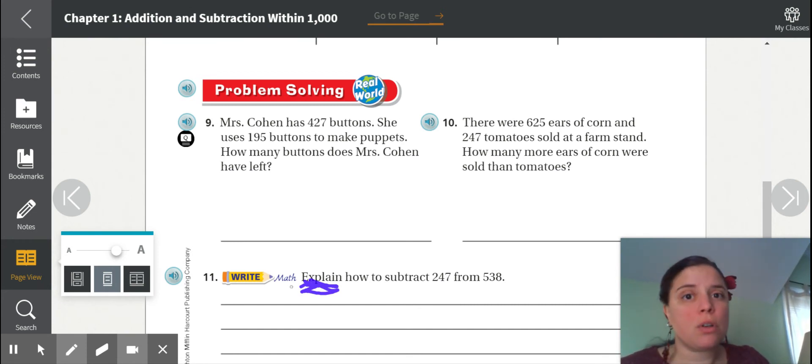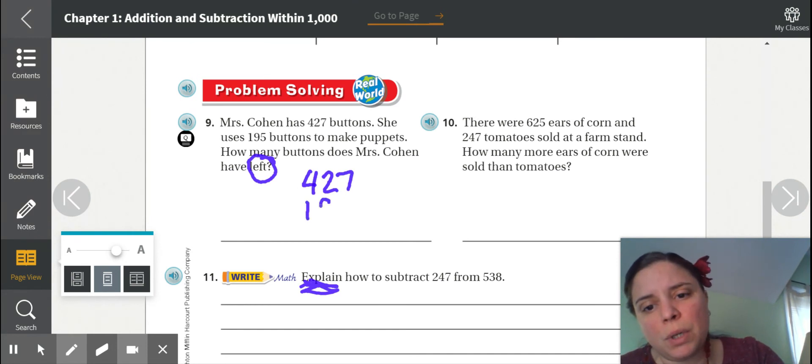Now it doesn't say about so we are just gonna figure this out. This is straight subtraction right? And we know it's subtraction because of this little word right here: left. How many buttons does she have left? It means we had to subtract some from it because she had more in the beginning. All right. So we're gonna do 427 minus 195.